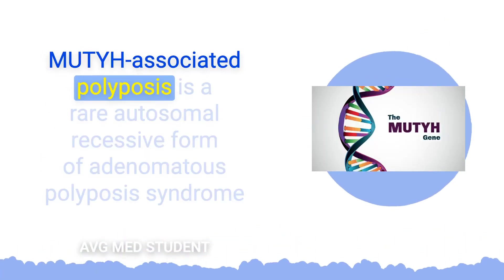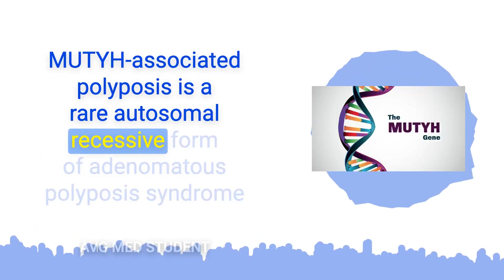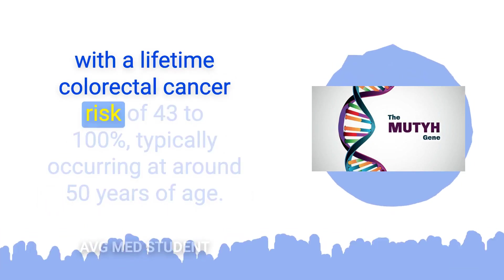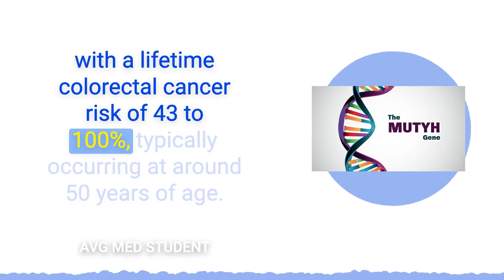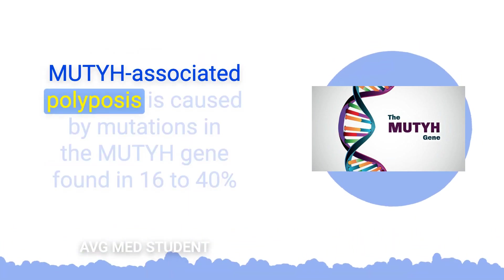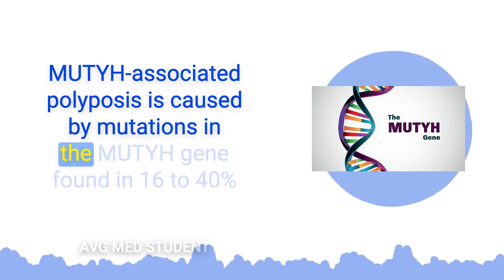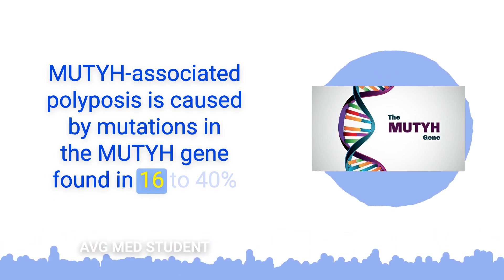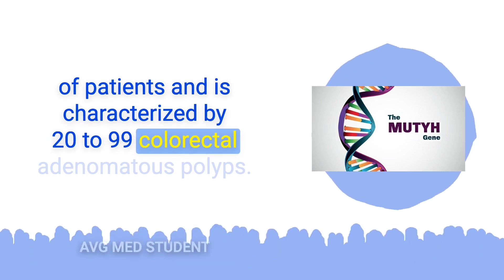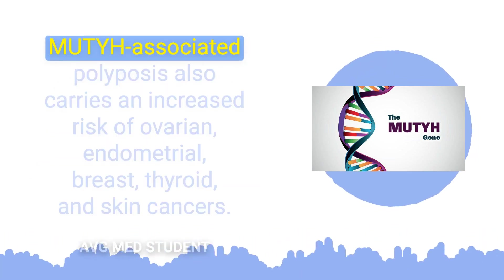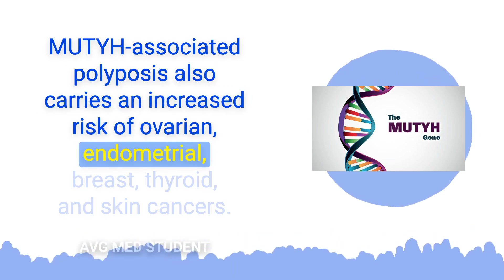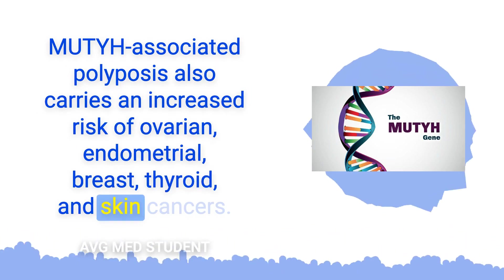MUTYH-associated polyposis is a rare autosomal recessive form of adenomatous polyposis syndrome with a lifetime colorectal cancer risk of 43 to 100%, typically occurring at around 50 years of age. It is caused by mutations in the MUTYH gene in 16 to 40% of patients and is characterized by 20 to 99 colorectal adenomatous polyps. MUTYH-associated polyposis also carries an increased risk of ovarian, endometrial, breast, thyroid, and skin cancers.